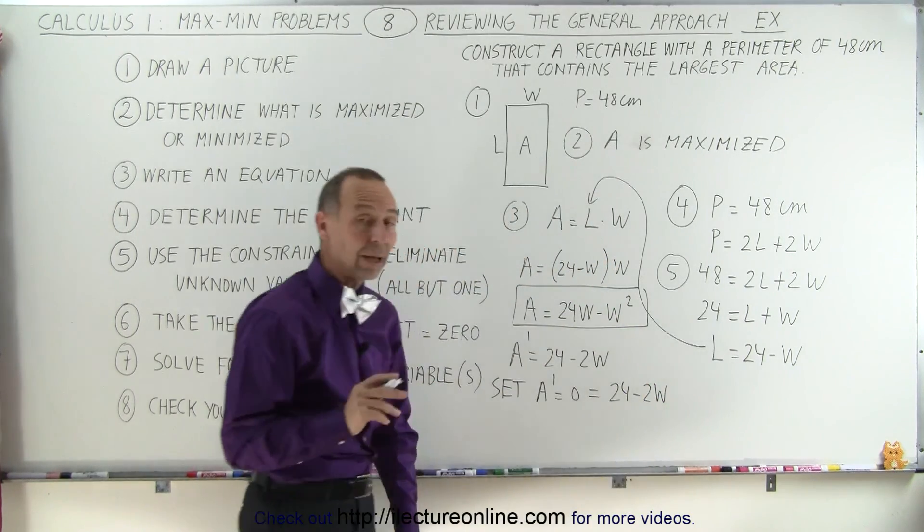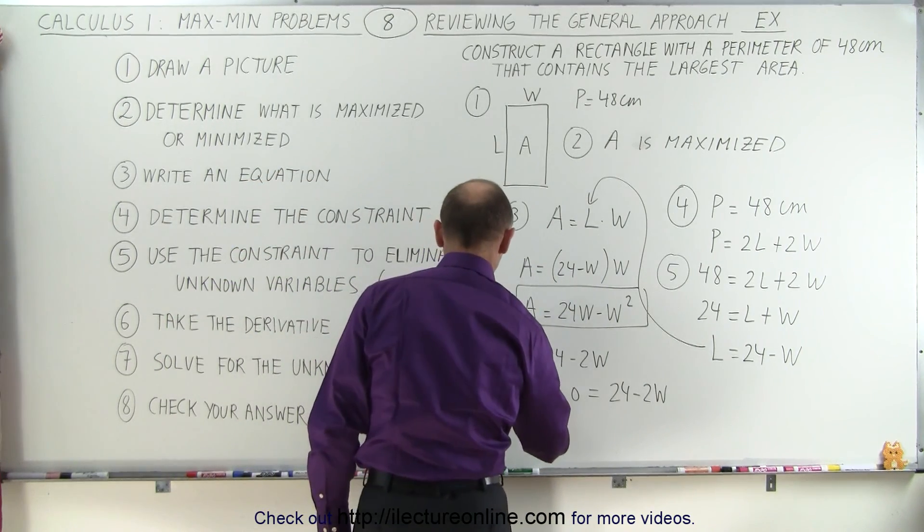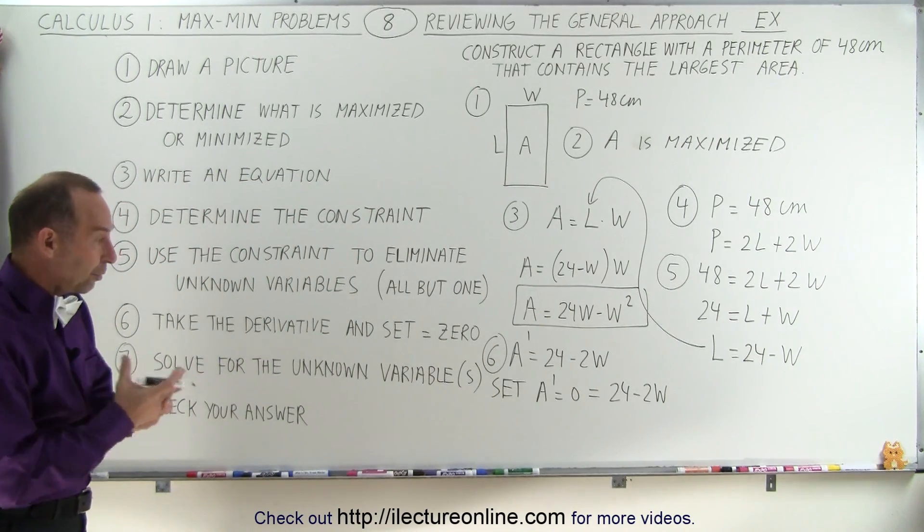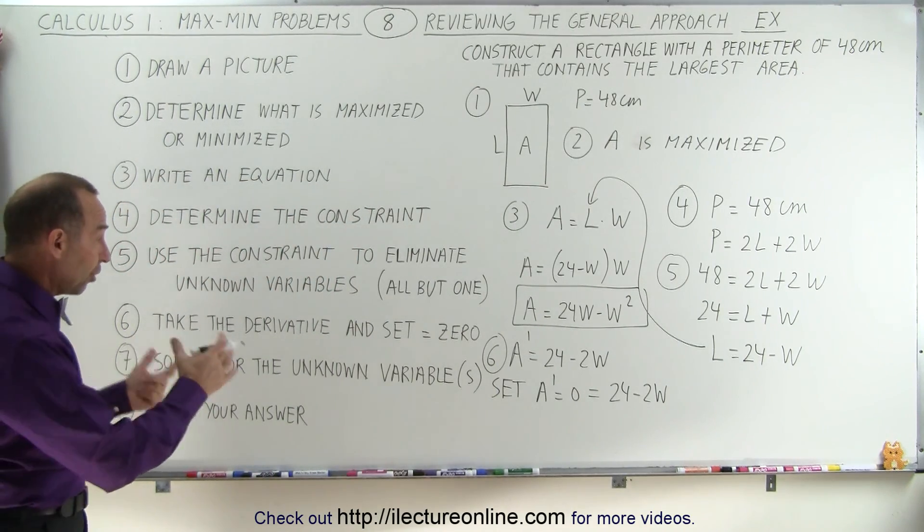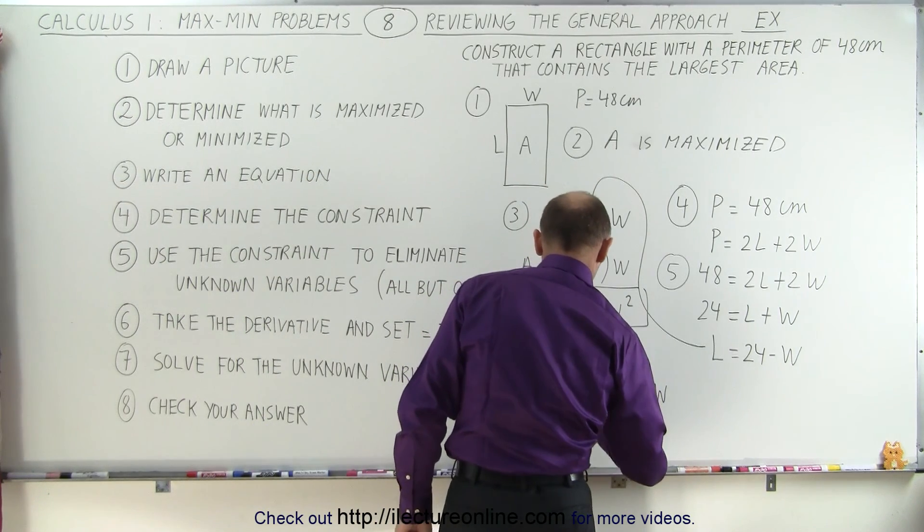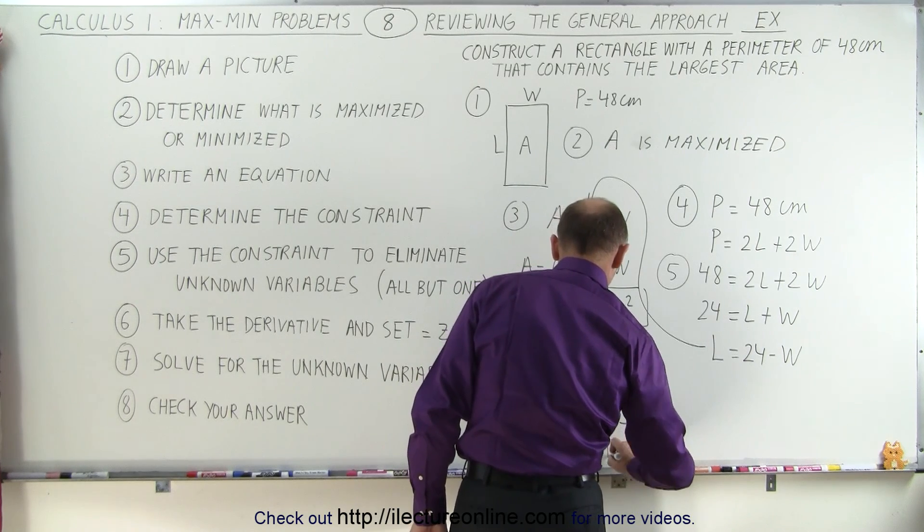Of course we do that so we can now solve for the unknown variable W. So that is now step number six. Step number seven, once we set the derivative equal to zero, we're now going to solve for the unknown. First of all, we can divide both sides by two, so we get zero is equal to 12 minus W, or W is equal to 12.